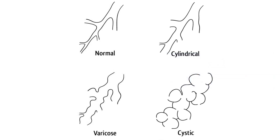These are the morphological types of bronchiectasis, and this one is the cystic type.